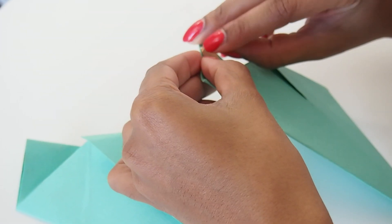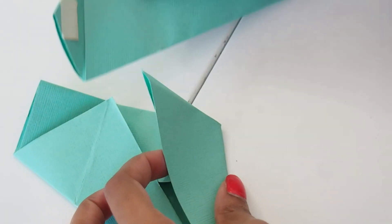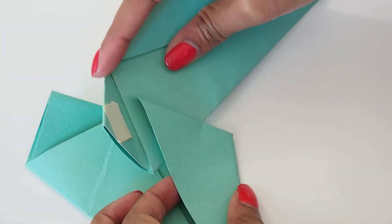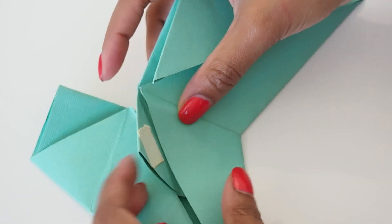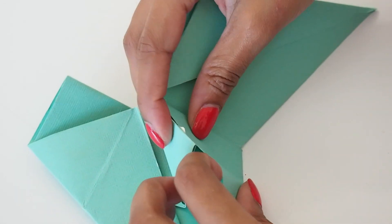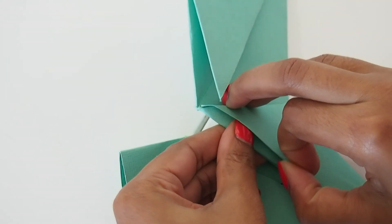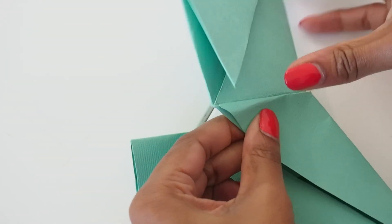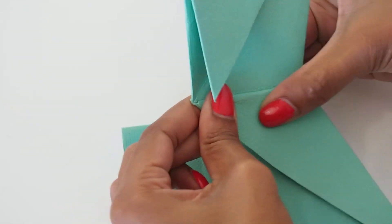Que je viens poser sur le triangle supérieur de notre module. Ensuite je soulève le volet de droite, j'insère le deuxième module à l'intérieur, et je rabats entre les deux feuilles le petit triangle où on a collé notre double face.